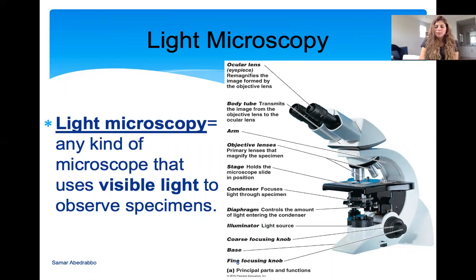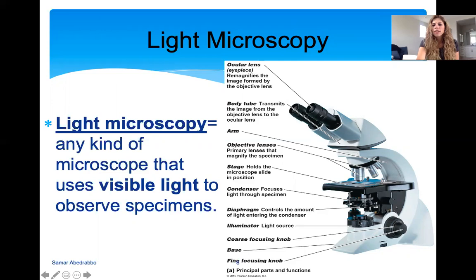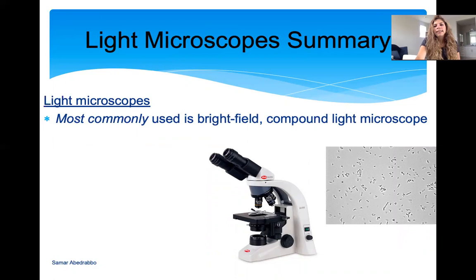A light microscope is a microscope that uses visible light to look at specimens or organisms. This is what a typical light microscope looks like. The reason it's called the light microscope is that there's a light source — when you turn on the microscope, that light turns on. You put your slide here, the light goes through and hits your slide, and then you can see it with your eyes.